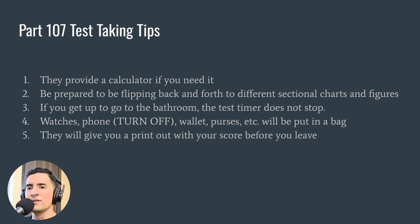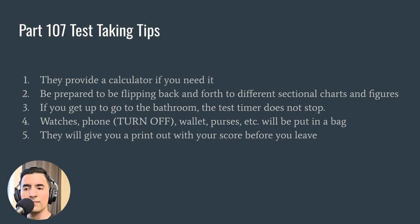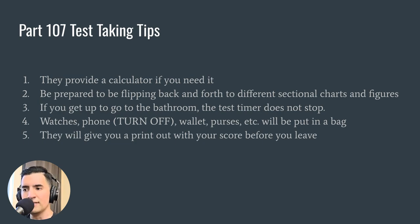The sectional charts have a lot of small information, so a magnifying glass really helps. The test timer does not stop if you go to the bathroom, so take care of that beforehand. Turn off your phone; wallets, purses, and watches go in a bag. They will give you a printout before you leave — make sure you don't leave without it so you know if you passed. That's the Part 107 questions I remember. I hope this helped. Leave any questions in the comments and I'll do my best to answer. See you in the next video.